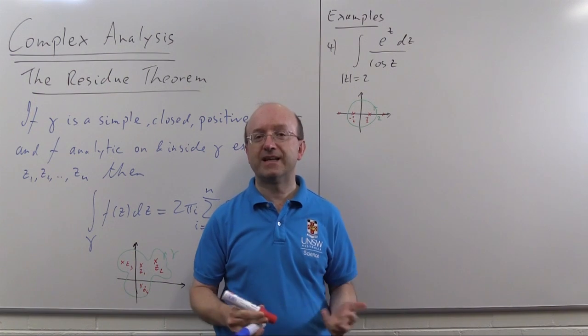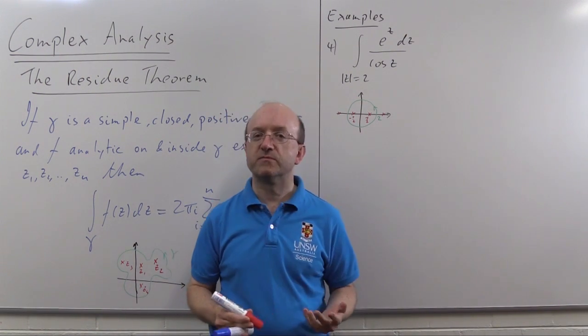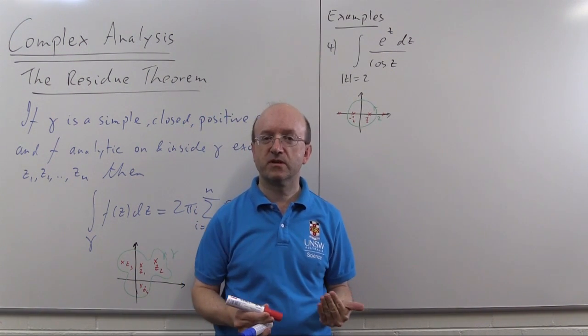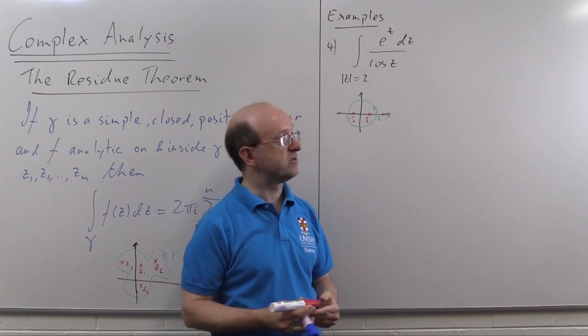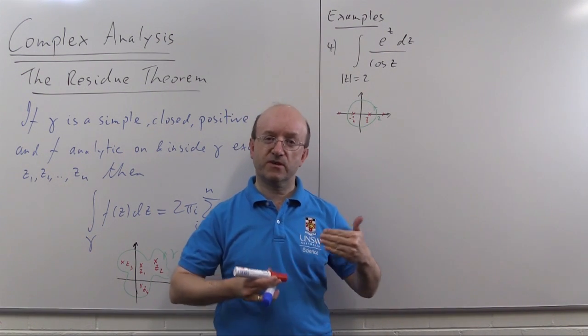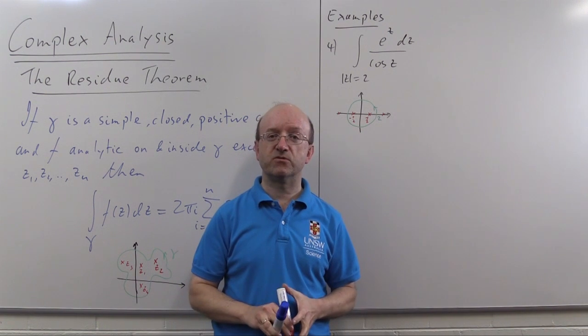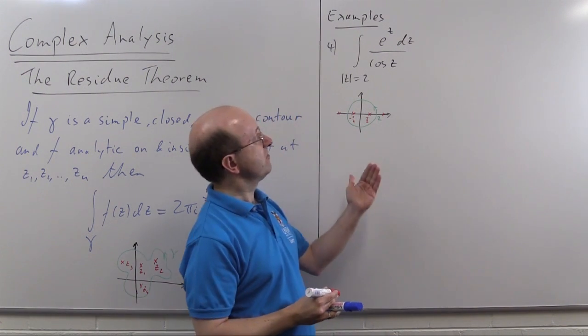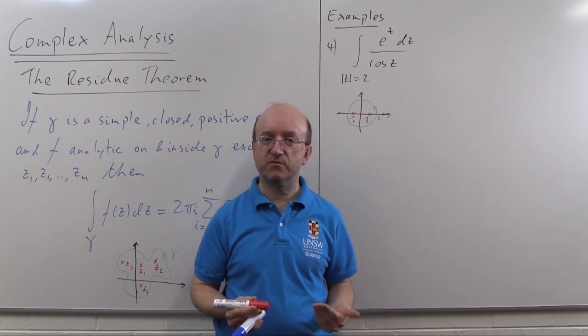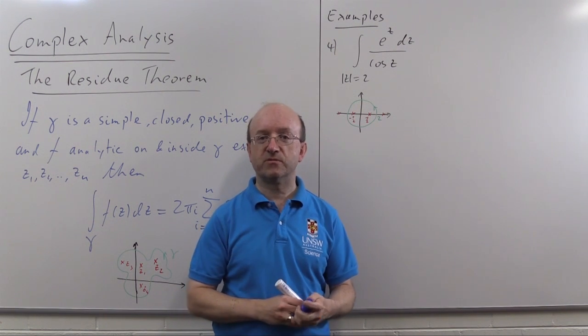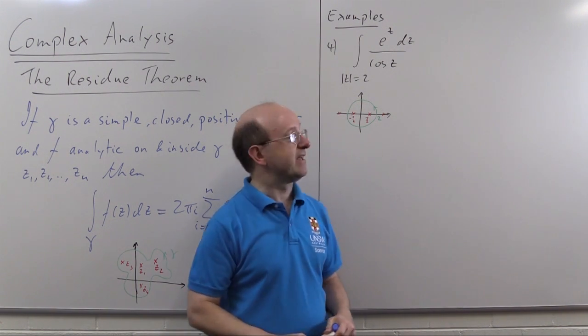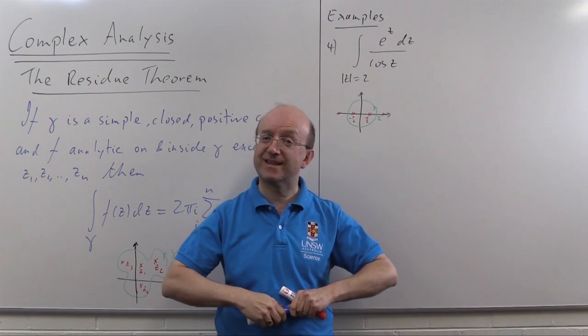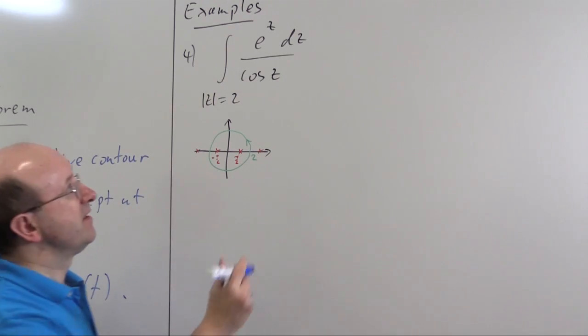So the first thing we need to work out is what type of singularity we've got. Well in fact we've got simple poles and we know that because cosine has simple zeros. Cos is 0 at odd multiples of π/2 but its derivative is not and if you remember the video I did or if you've seen the video I did on zeros and poles that tells us that cos has a simple zero at odd multiples of π/2 so 1/cos and therefore e^z/cos has simple poles at odd multiples of π/2. So knowing that we can calculate the residue quite quickly and in fact our calculation of the residue furnishes us with another proof of that effect.